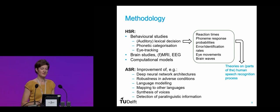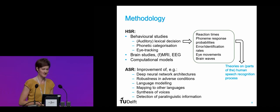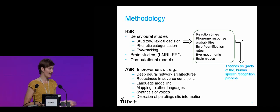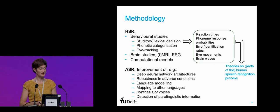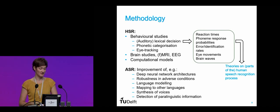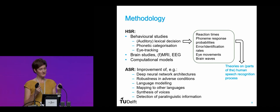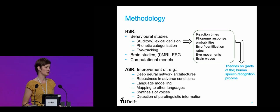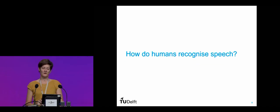In automatic speech recognition, people typically work on improving deep neural network architectures, improving robustness against adverse listening conditions like noisy backgrounds, improving language modeling, and mapping to other languages — can we build a system trained in one language and map it to another for which we have less training data? The synthesis of voices or detection of paralinguistic information. The types of questions and methodologies in the two fields are quite different.